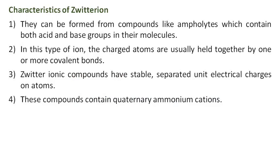Characteristics of zwitterion: They can be formed from compounds like ampholytes which contain both acid and base groups in their molecules. In this type of ion, the charged atoms are usually held together by one or more covalent bonds.